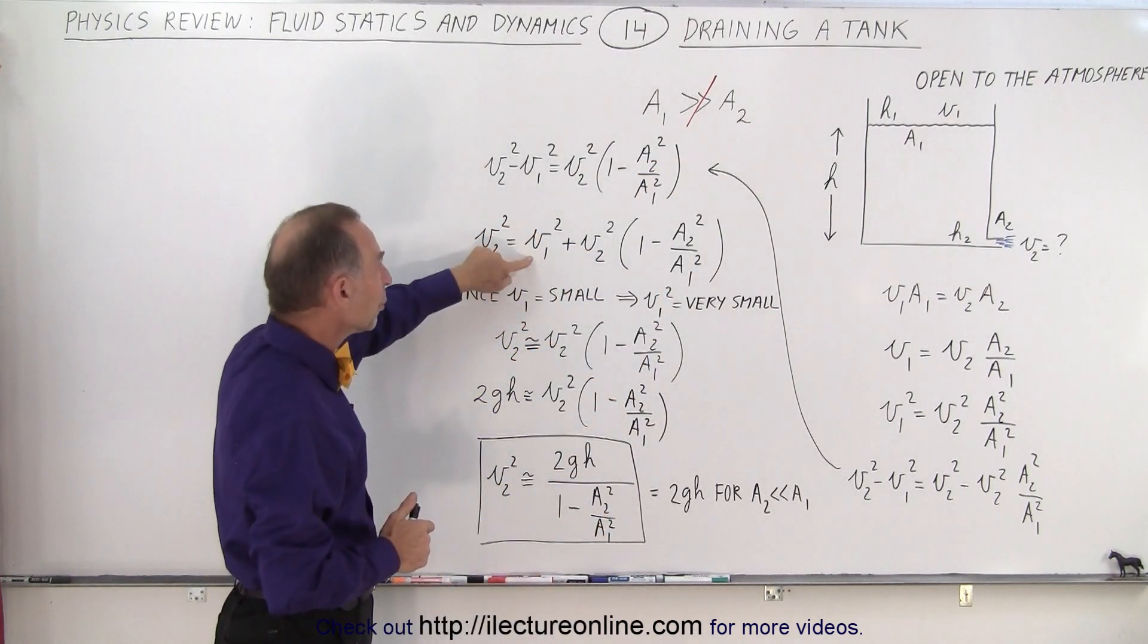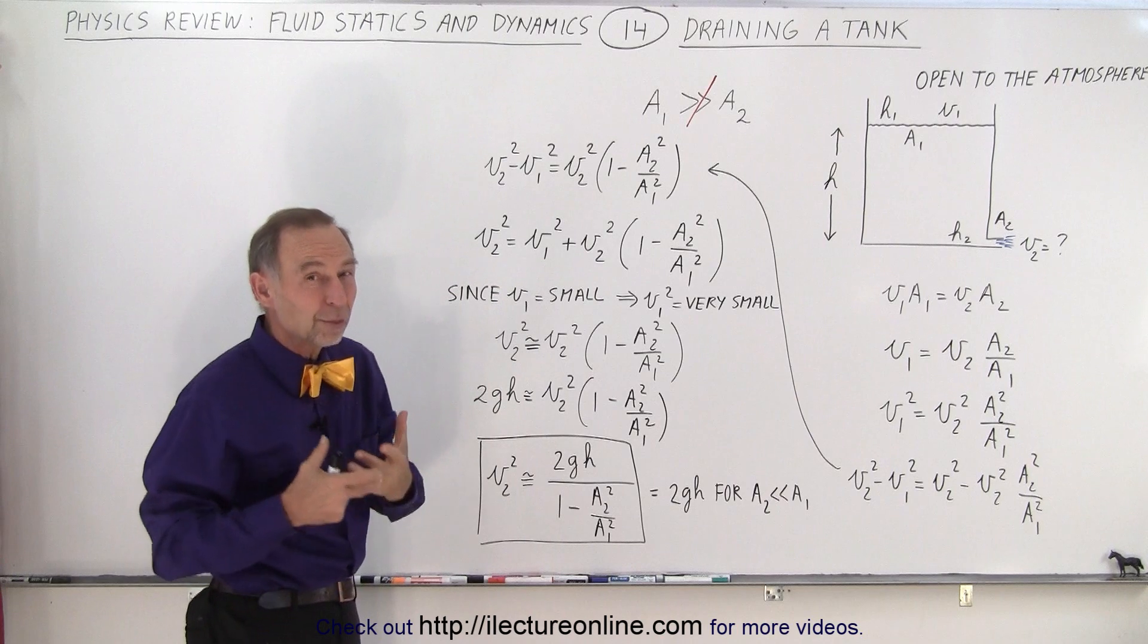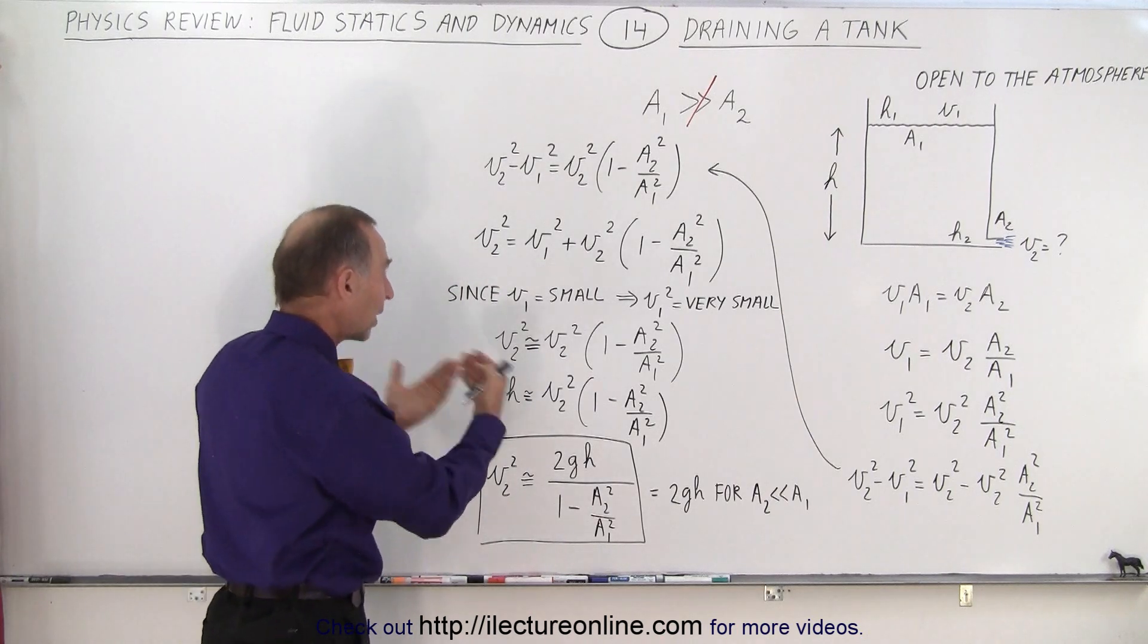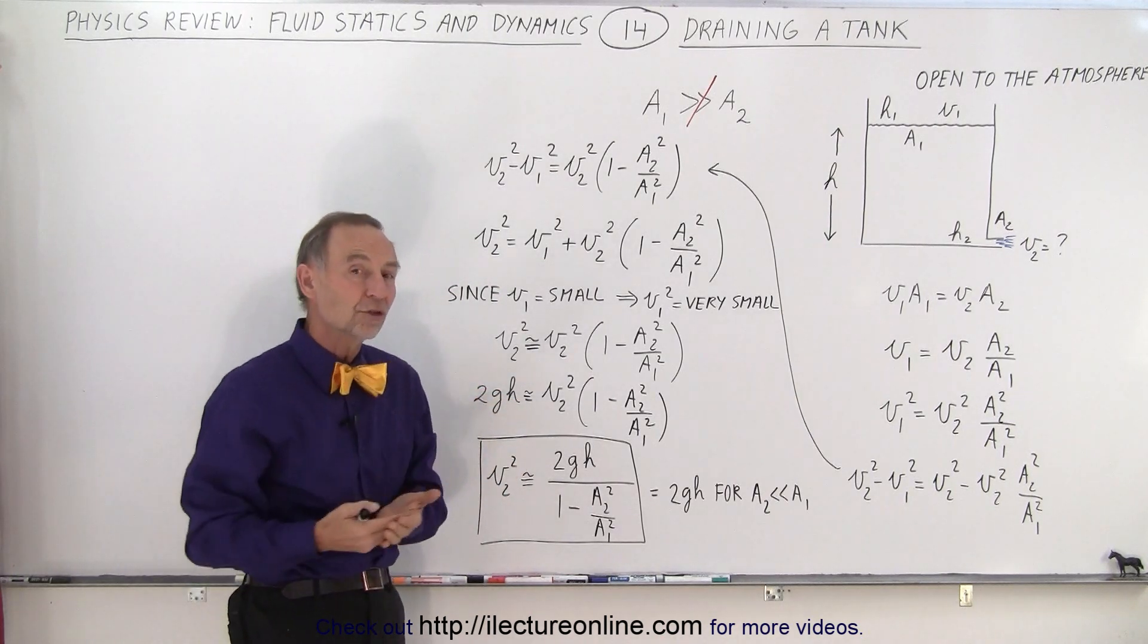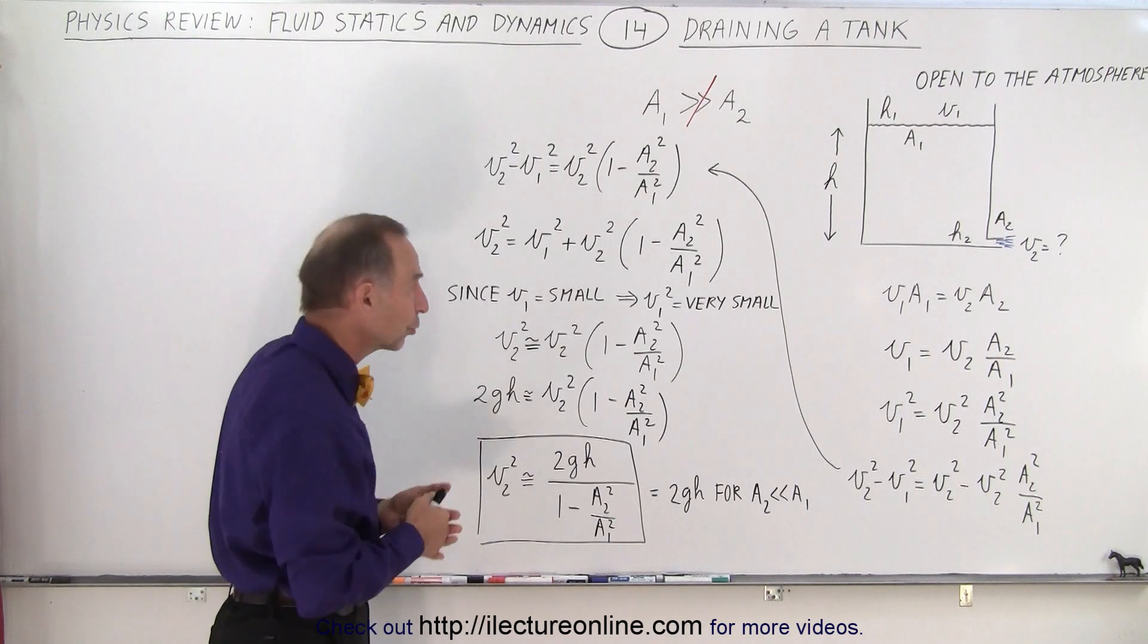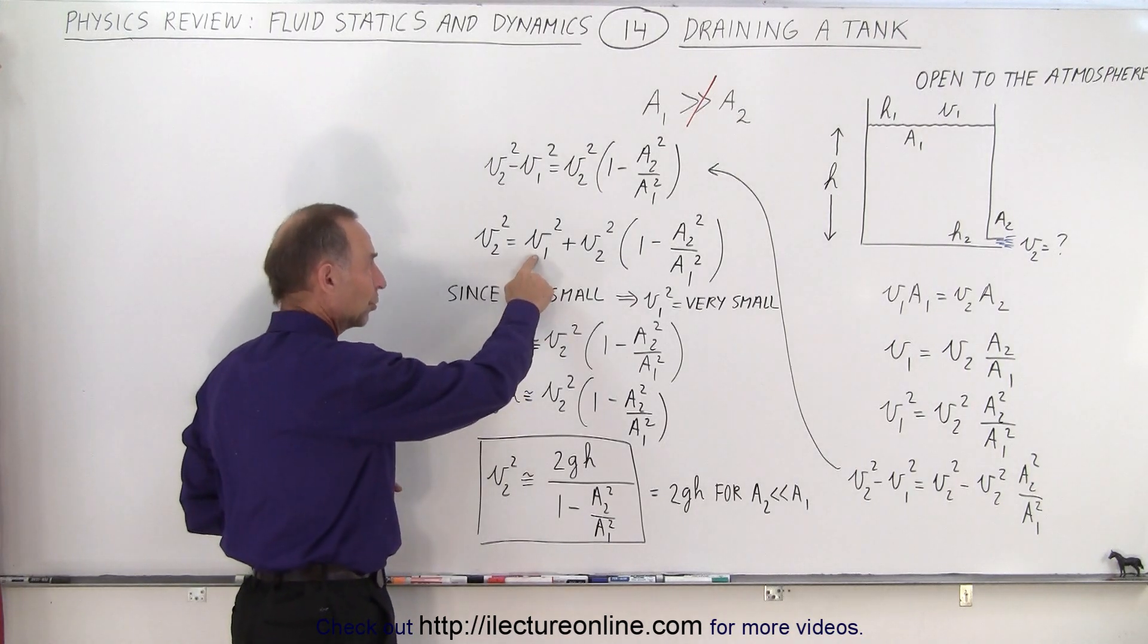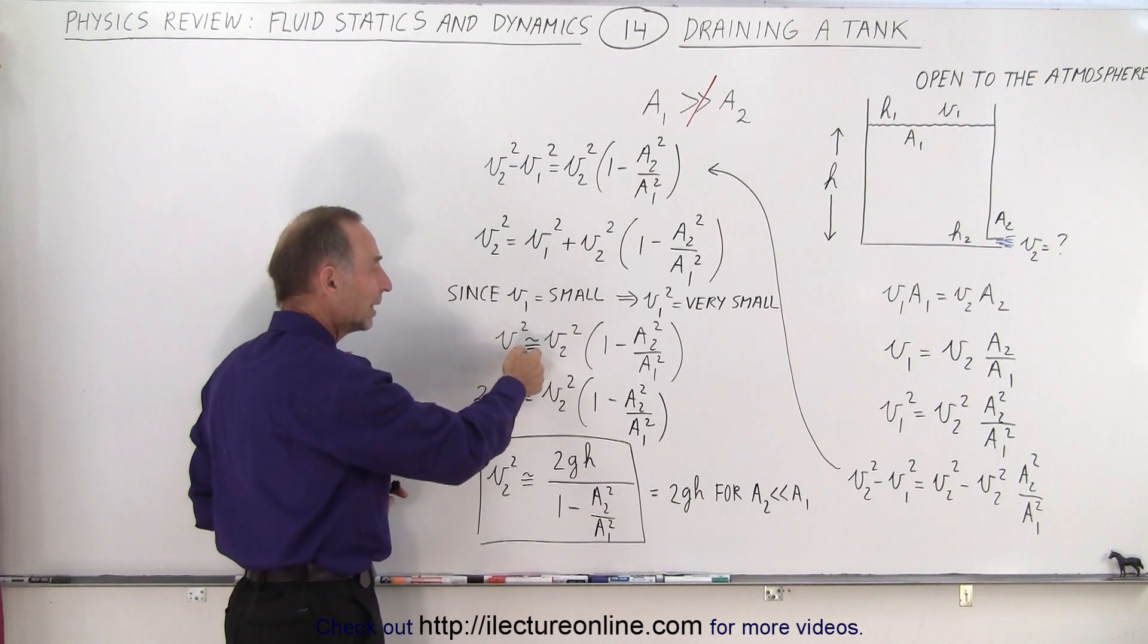Which means that v1 relative to v2 should be relatively small, and then when we square v1 it is really really small relative to v2 squared. So because of that we can ignore this term right here, we can just simply remove it.